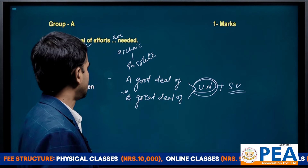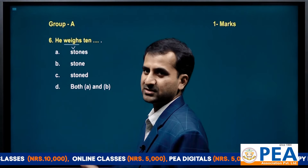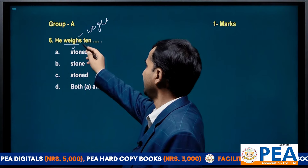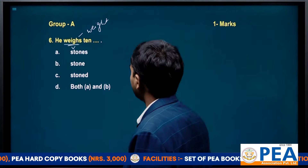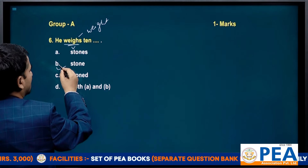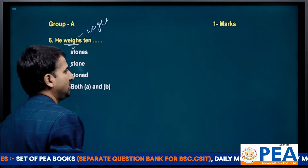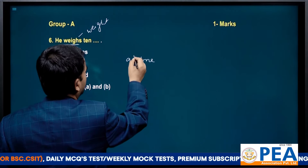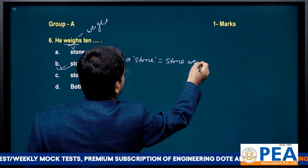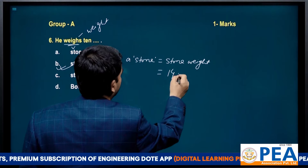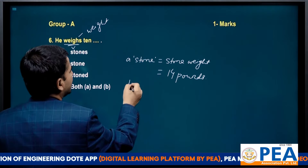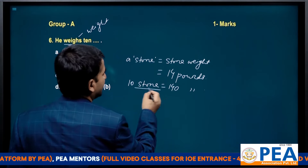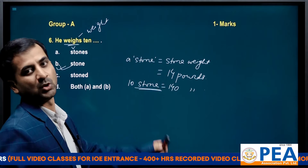Next question: 'He weighs ten...' The verb is 'weigh' and the noun is 'weight'. The answer is 'stone'. In the APS system, one stone equals 14 pounds, so 10 stone equals 140 pounds. Note: we say '10 stone', not '10 stones' — it is always '10 stone', '14 stone'.